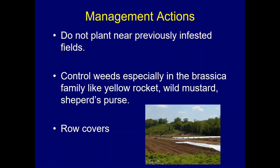Row covers are another useful tool that can prevent adult insects from laying eggs on plants. If set out early enough and placed firmly in place, they can give good protection. Key considerations: manage weeds once covers are on, and ensure a very tight seal so that insects cannot enter through gaps that are left open.